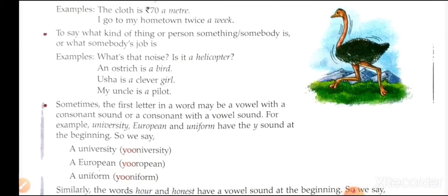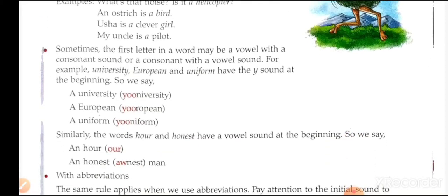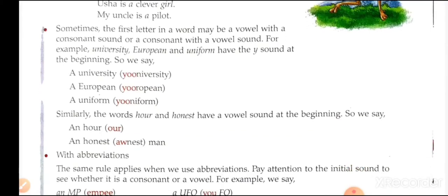Sometimes the first letter in a word may be a vowel with a consonant sound, or a consonant with a vowel sound. For example, 'university,' 'European,' and 'uniform' have a 'y' sound at the beginning, so we say 'a university,' 'a European,' 'a uniform.' Words like 'hour' and 'honest' have a vowel sound at the beginning despite being spelled with 'h,' so we say 'an hour,' 'an honest man.'